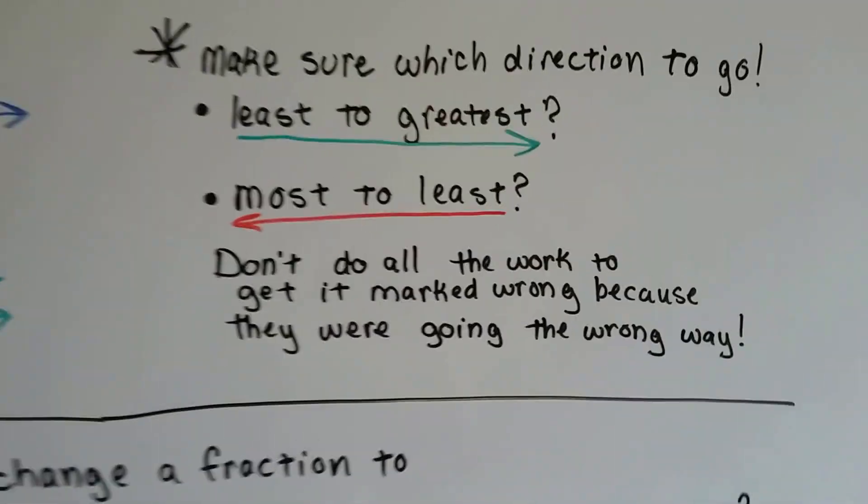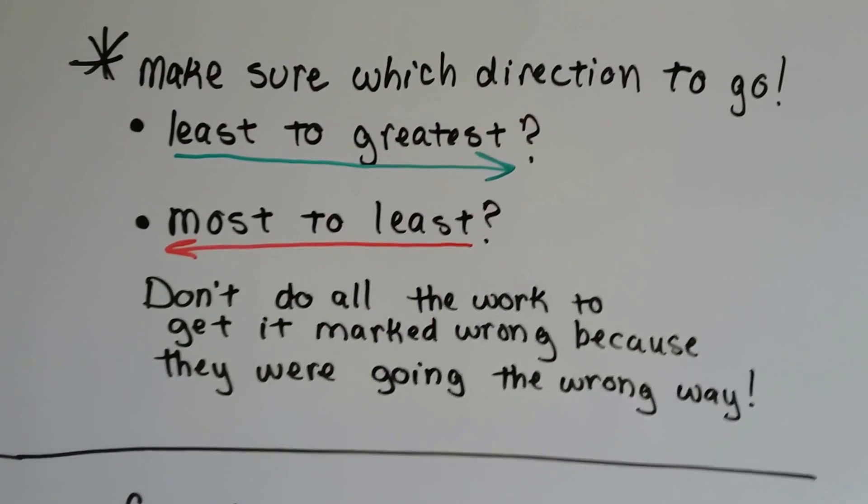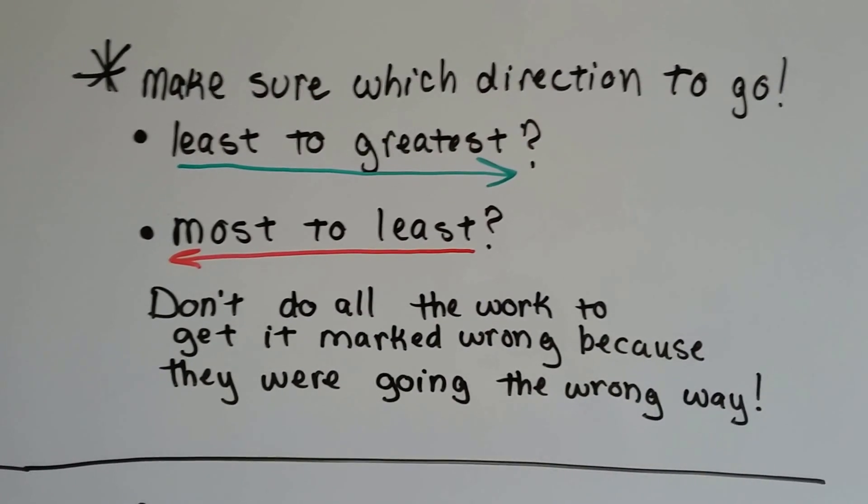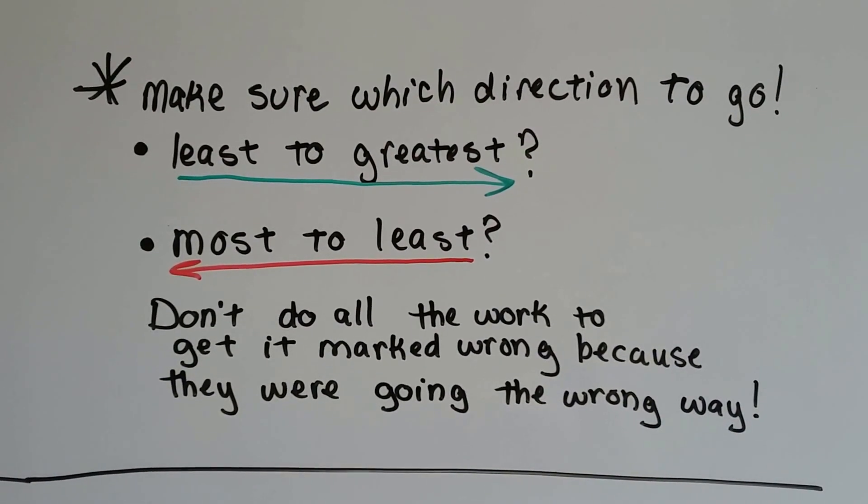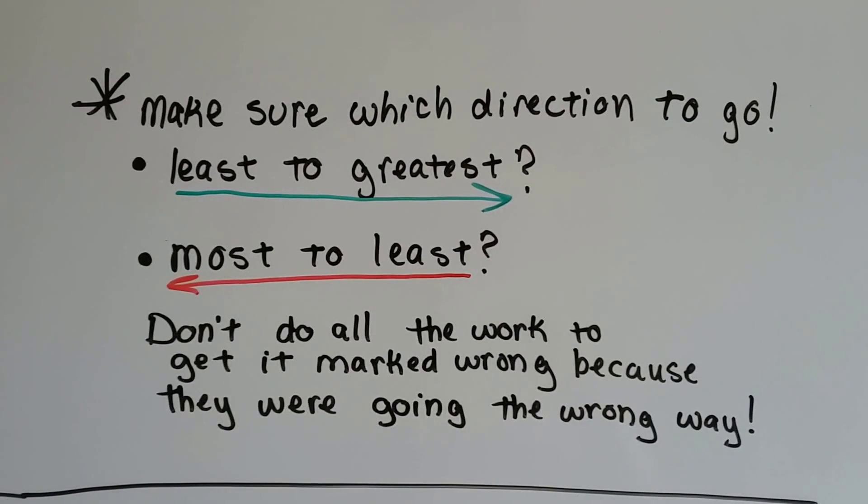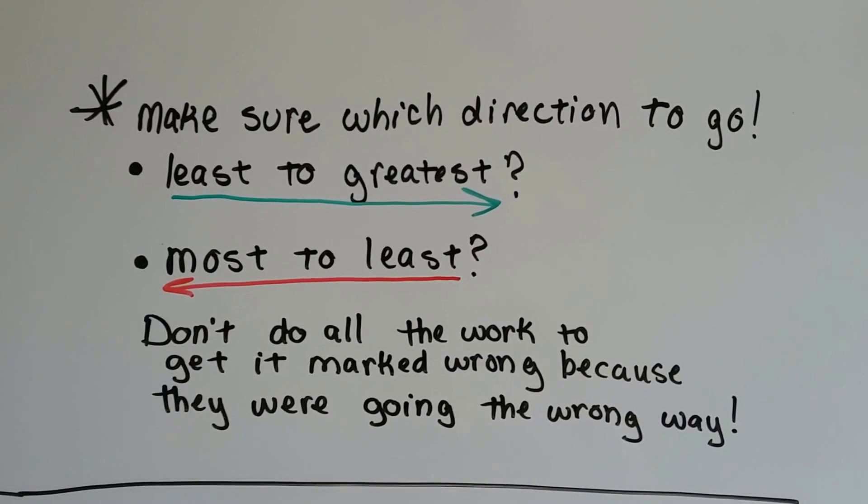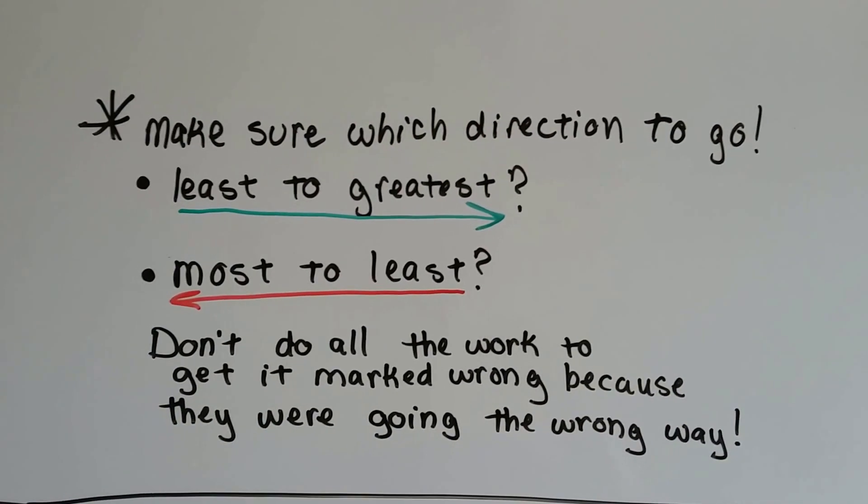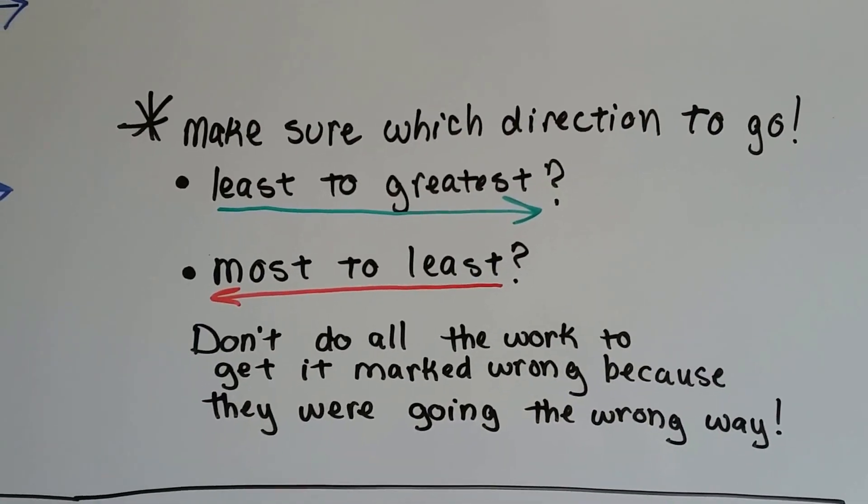The other thing we need to make sure of is which direction to go. Are you supposed to go from least to greatest? Or most to least? You don't want to do all that work of getting them all converted and figuring out which one's bigger, which one's smaller, to find out you went the wrong way. That would be a pain in the neck, wouldn't it?